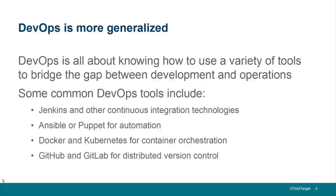DevOps is supposed to blur the lines between the two and make those work better together. If you're a DevOps person, you're going to be working with things like Jenkins and continuous integration tools, Ansible or Puppet to help automate things, Docker and Kubernetes for container orchestration of things going into deployment, and maybe even automating the creation of those Docker containers and maintaining Kubernetes as things go from development to the operations world. You might even be using GitHub and GitLab for distributed version control.